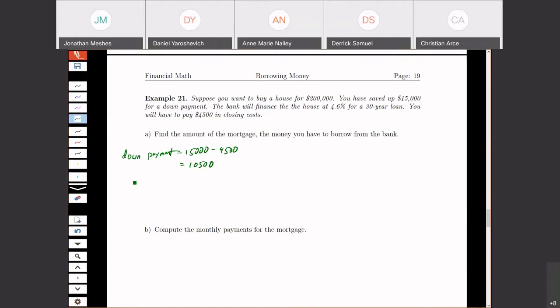So then the amount that I have to finance is the cost of the house minus the amount that I have for a down payment. So I have to borrow $189,500 for this house.